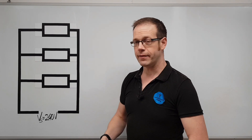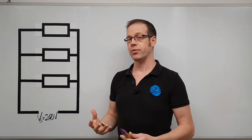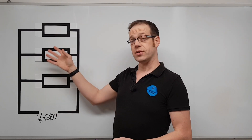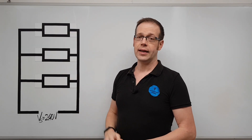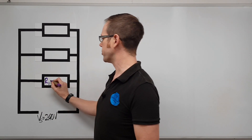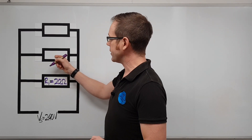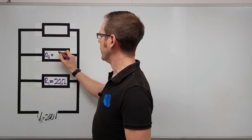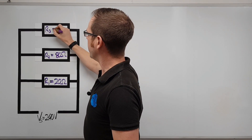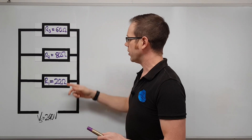Now we add resistor values. We have resistor one (R1), resistor two (R2), and resistor three (R3) — these represent loads that might be found in an electrical circuit, such as lighting points, socket outlets, or elements of an industrial machine. R1 is 20 ohms, R2 is 80 ohms, and R3 is 60 ohms.